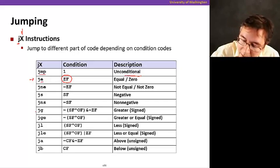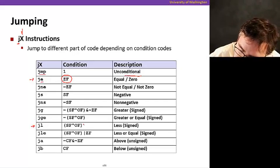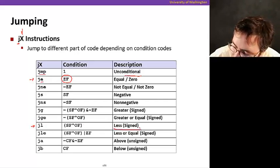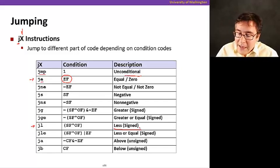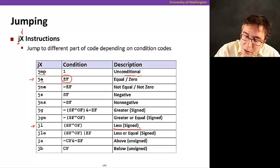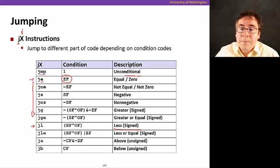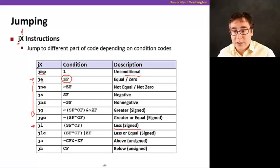If you use jl, it's jump if less than. So if you do a comparison and it turns out that it's less than, the jump's going to happen. I encourage you to read in the book about how all of these instructions work.